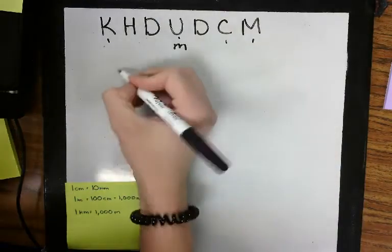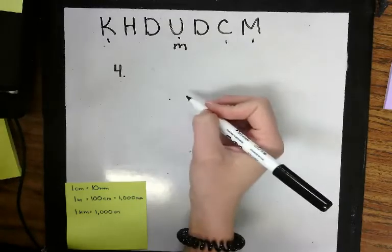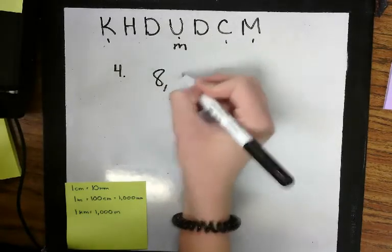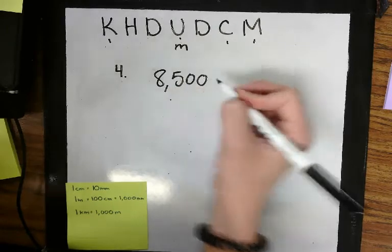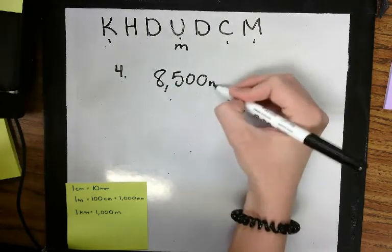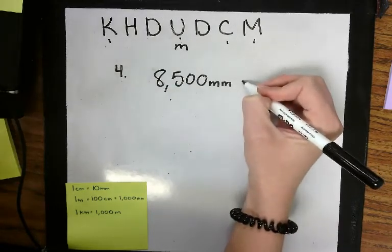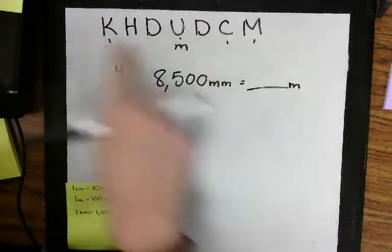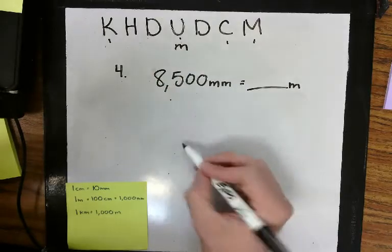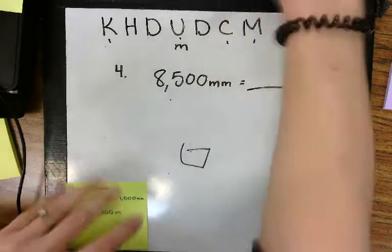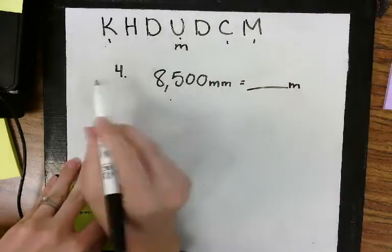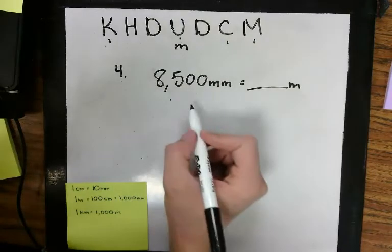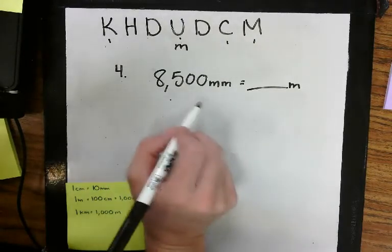Let's do number 4. 8,500 millimeters is how many meters? I'm going to use this strategy. If you want to use the conversion calculator, go use it. But I'm going to use the decimal point strategy for this one.